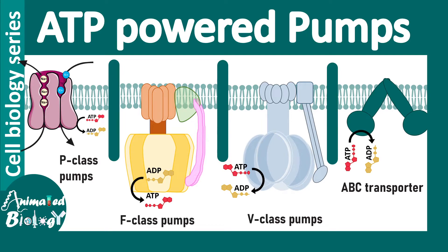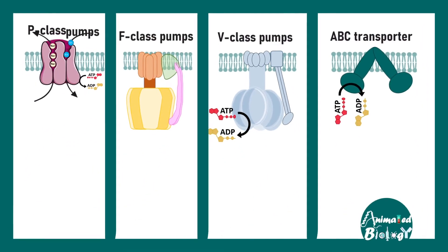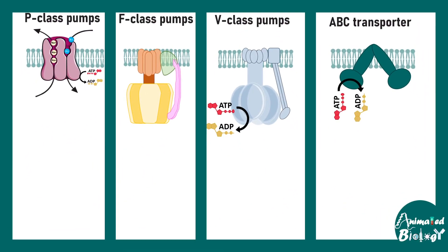In this short lecture we'll talk about ATP-powered pumps. They are one type of membrane carriers or transporters which require ATP hydrolysis to function. There are four classes of pumps we are going to talk about: P-class ATPase, F-class pumps, V-class pumps, and ABC transporters.